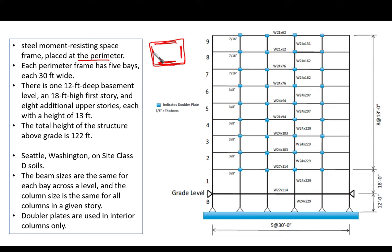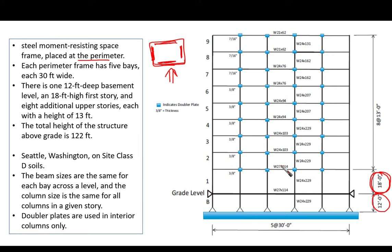It is common to place the resisting frames on the perimeter of the building. If we're talking about earthquake direction in the north-south direction, two steel frames are going to work and we focus on one of them. Each perimeter frame has five bays, each 30 feet wide. There is a 12-foot deep basement and an 18-foot high first story.